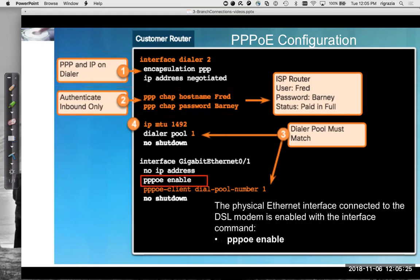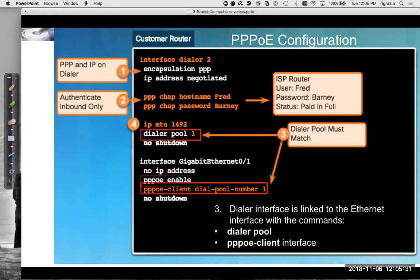On the physical interface of the router, we have PPPoE enabled. Between the physical interface and the dialer, on the physical interface we say PPPoE client dialer, dial pool number. This dial pool number must match the dialer pool number on the dialer interface.